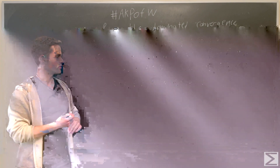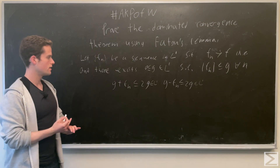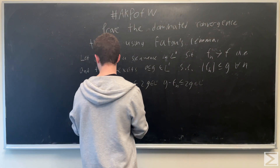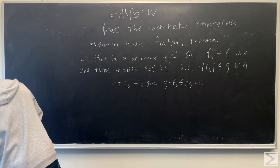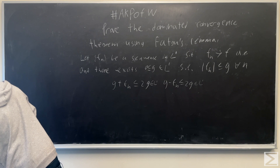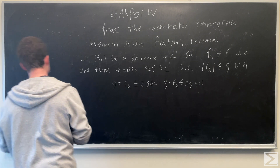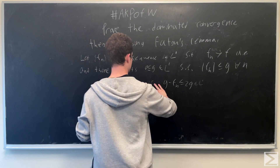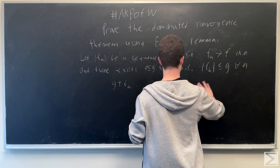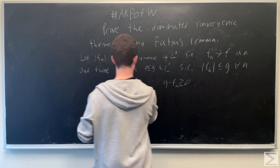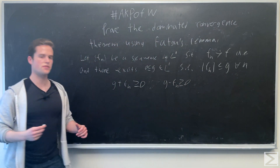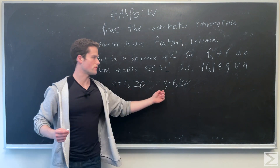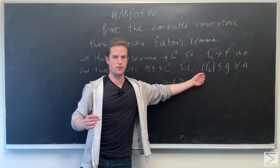Now applying Fatou's Lemma to g plus fn and g minus fn, which we can do since these will both be positive functions. Specifically, g plus fn is greater than or equal to 0, and g minus fn is also greater than or equal to 0. This just follows from the absolute value of fn being less than or equal to g.